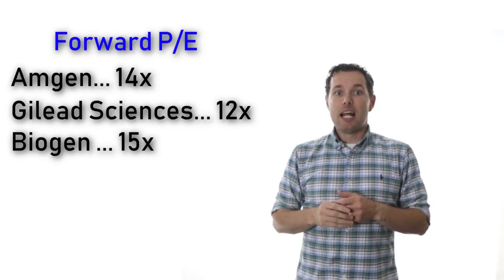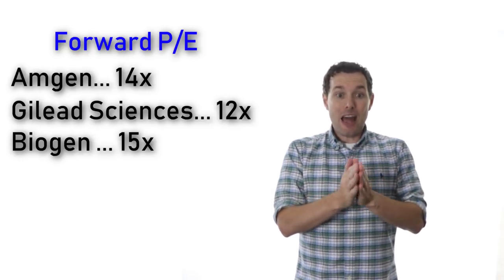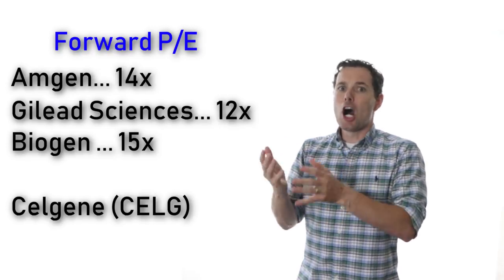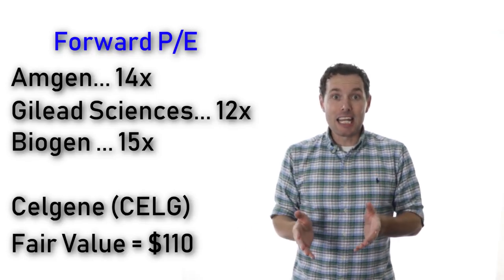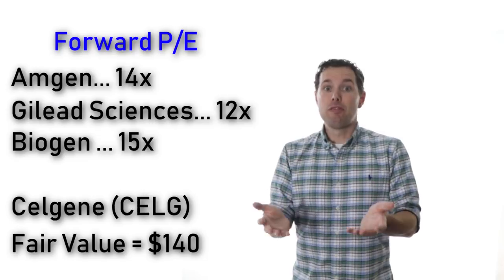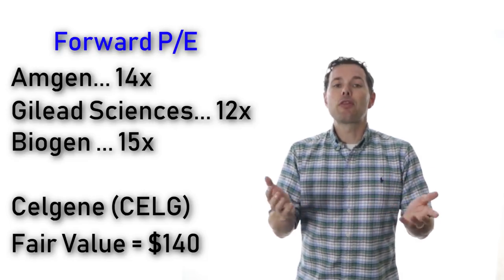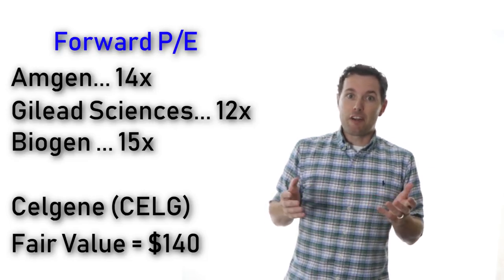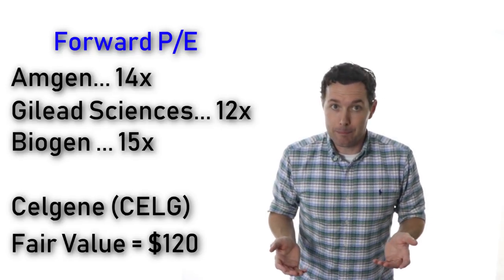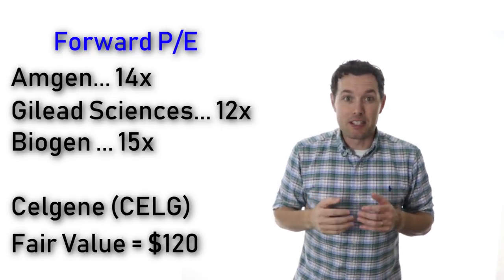Now if we take the low end of 12x, that would mean that the price target would be about $110. If we take the high end of 15x, it would be $140. Now let's say that we used an average of, let's say 13, that would give us a fair value of, call it $120. So from my perspective, given the recent struggles of Celgene, I think it's fair to use the low end of estimates.